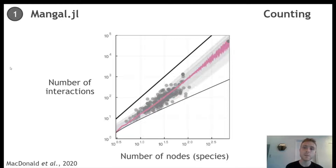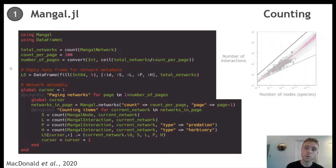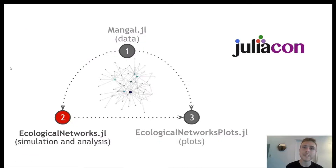We recently published a paper that revisited this relationship using all datasets archived on Mangal. Here is code to count the number of species and the number of interactions of networks in Mangal. We can also see an example of a query. When we have queried the data, we might want to analyze them, and this is exactly one of the roles of our second package, Ecological Networks.